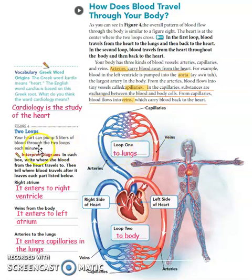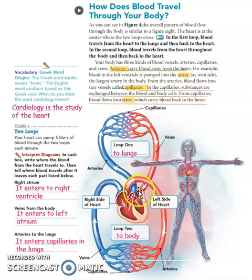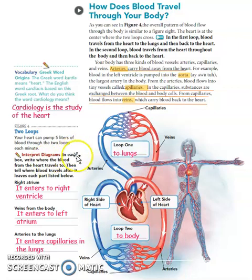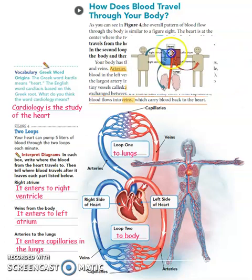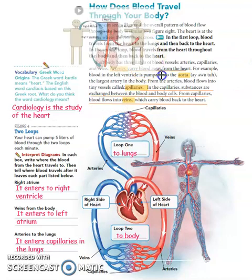Now let's try to answer this: your heart can pump five liters of blood through two loops each minute. In one minute, the heart can pump a volume of five liters — that is a lot. Let's try to interpret this diagram. In each box, write where the blood from the heart travels to, then tell where the blood travels after it leaves each part.